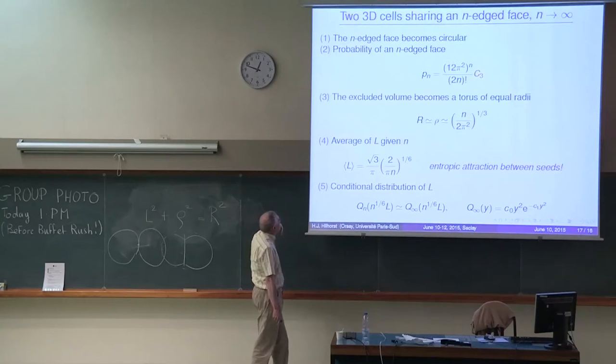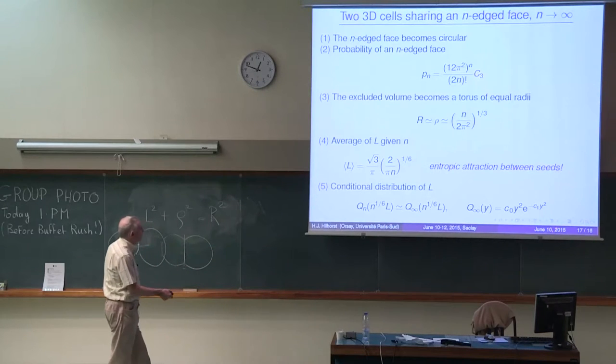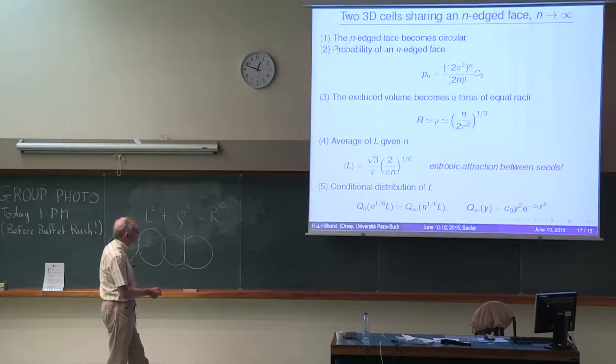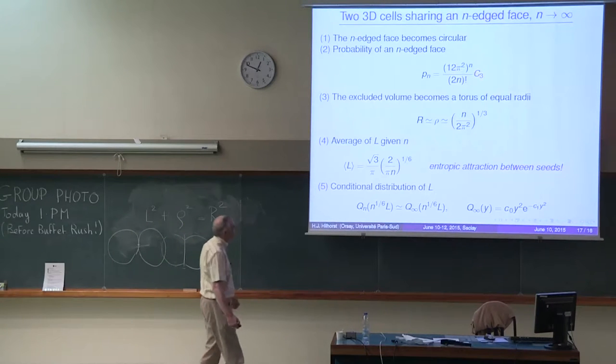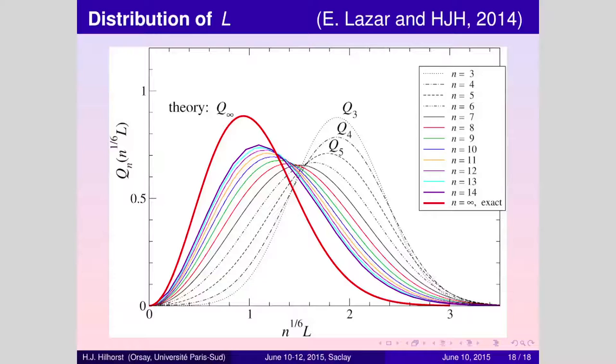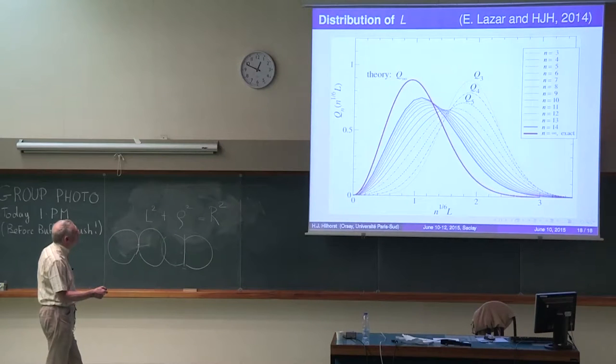In fact, you can ask for the conditional distribution of that inter-seed distance ℓ, given that the interface is n-sided. Finally, it turns out that you can write this as a scaling function, which I call q_∞, of only the product n^(1/6) ℓ. And that scaling function takes the form of a square times an exponential. Let us see what the simulations are giving. That is my last transparency.